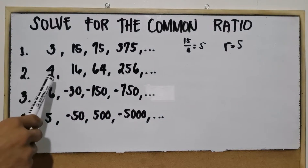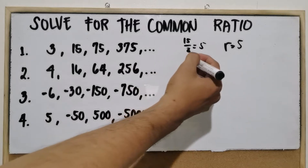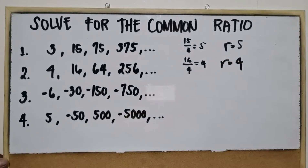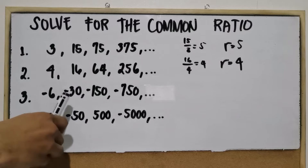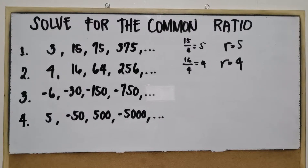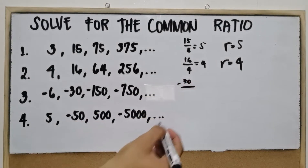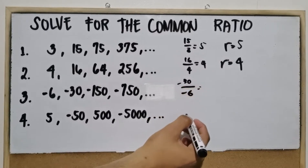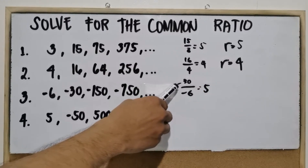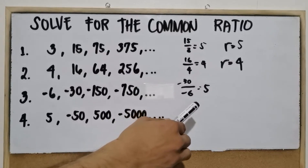Number 2: the same method — second term divided by the first term. 16 divided by 4 is 4, so the common ratio is 4. For number 3: the sequence is negative 6, negative 30, negative 150, negative 750. Second term divided by the first term: negative 30 divided by negative 6 equals positive 5. It is positive 5 because when you divide a negative by a negative number, the answer is positive.